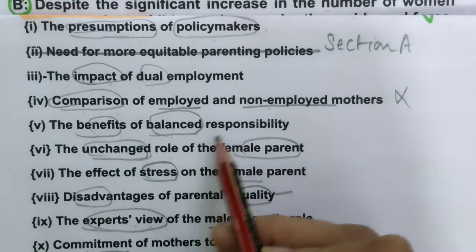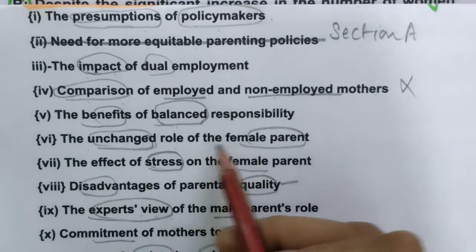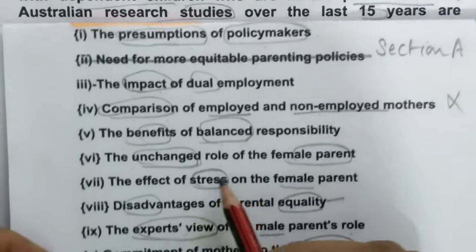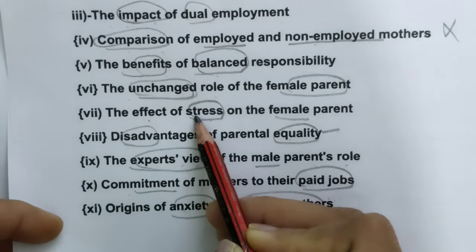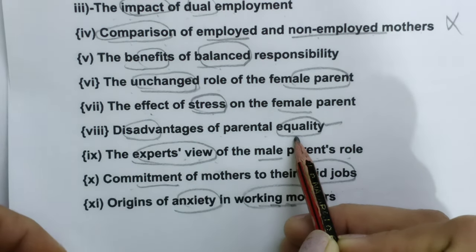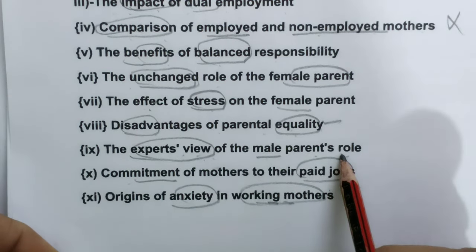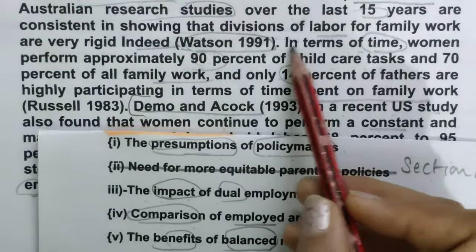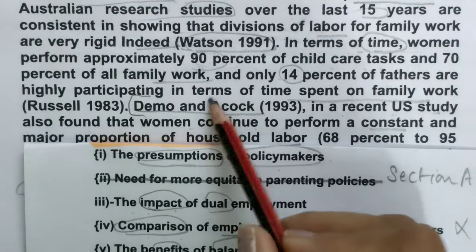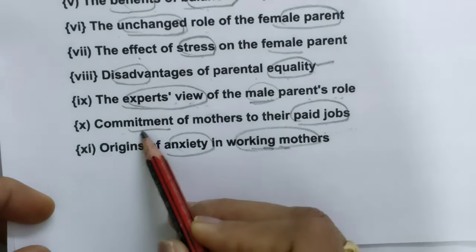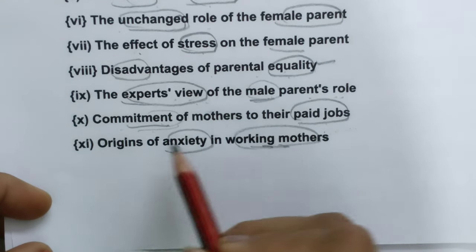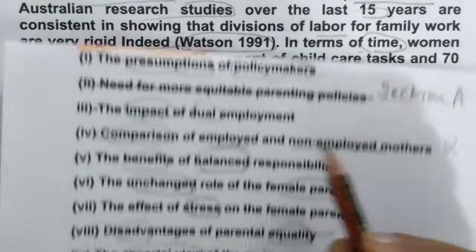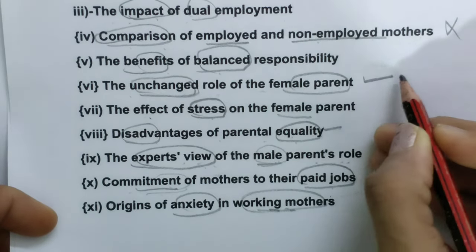'Benefits of Balanced Responsibility' — nothing about that. 'The Unchanged Role of Female Parents' — this may be the answer. Checking remaining options: 'Effect of Stress' — no stress mentioned. 'Disadvantages of Parental Equality' — no equality discussed. 'Experts View of Male Parent' — they are not talking specifically about male parents. 'Commitment of Mothers to Work' — nothing given. 'Origins of Anxiety in Working Mothers' — no. The passage says women continue to perform a constant proportion of work — meaning unchanged role of female parent. So, the answer for Section B is 'The Unchanged Role of Female Parents.'